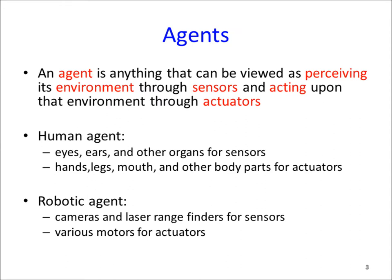An agent is anything that can be viewed as perceiving its environment through sensors and acting in that environment through effectors or actuators. We also use the word 'observations' for sensors and 'actions' for actuators. We are agents because we have eyes, ears, and skin as sensors, and arms and a mouth as effectors. So therefore we are agents.